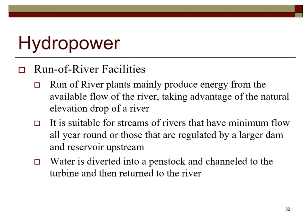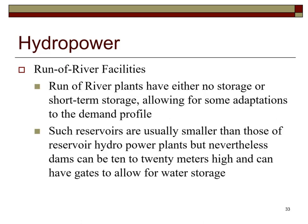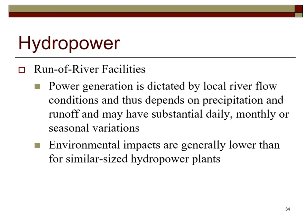Run-of-river plants mainly produce energy from the available flow of water, taking advantage of the natural elevation drop of a river. Water is diverted into a penstock and channeled to the turbine, then returned to the river. These plants have either no storage or short-term storage. Dams can be 10 to 20 meters high, and power generation depends on precipitation and runoff, with potential daily, monthly, or seasonal variations.